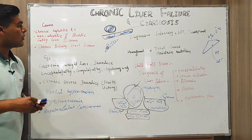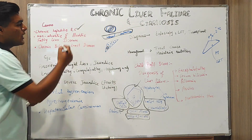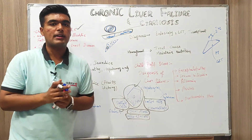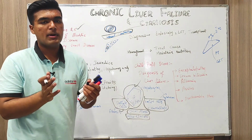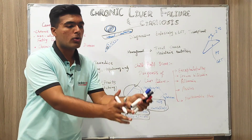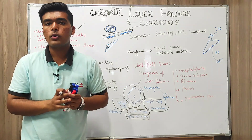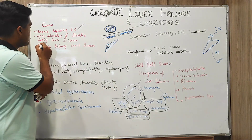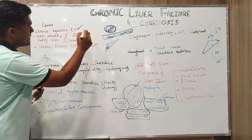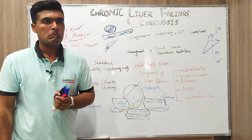Now moving towards causes: the first main cause is chronic hepatitis — hepatitis B and C — followed by alcoholic and non-alcoholic hepatitis diseases, fatty liver diseases, and biliary tract diseases.